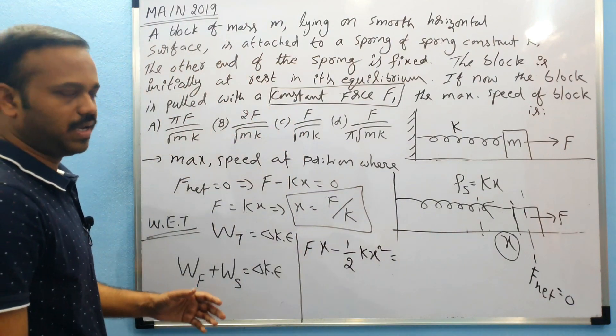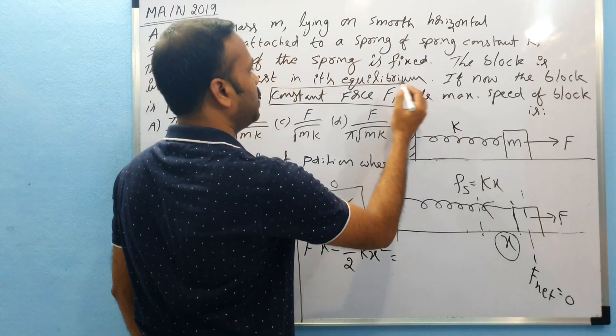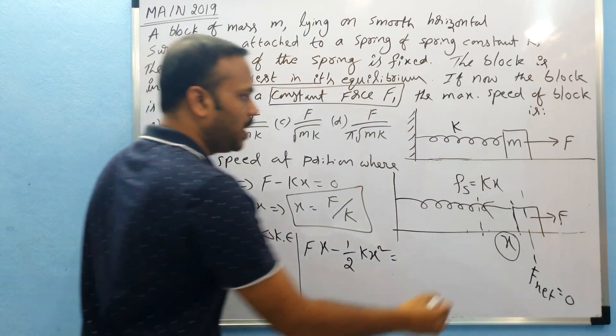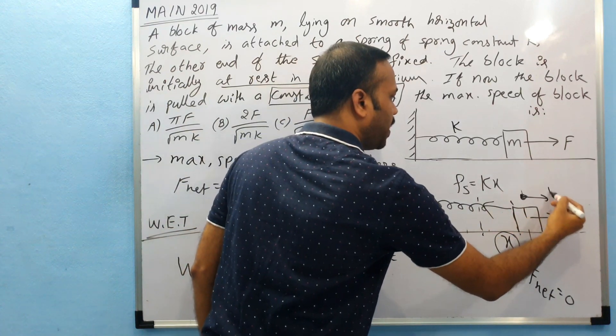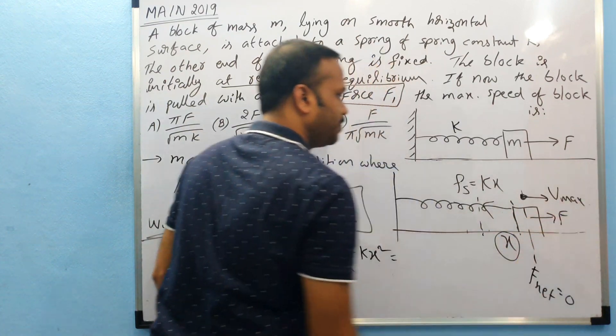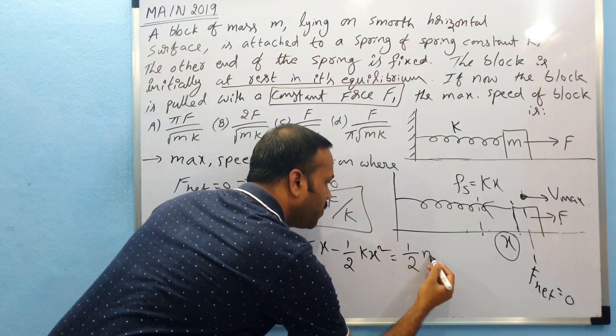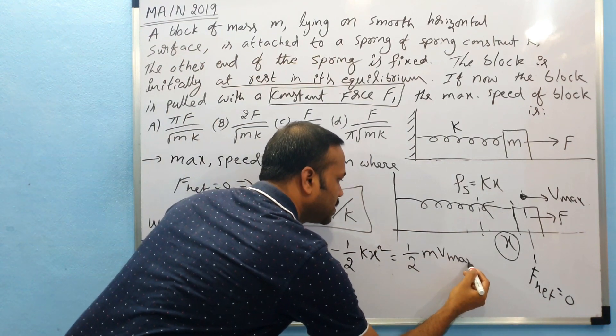Initially this is at rest, they said it is at rest in its equilibrium position. Finally, let us assume it gets maximum velocity v max at x. So the change in kinetic energy is half m v max squared.